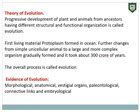The first living material, such as protoplasm, was formed in the ocean, and further changes went from simple unicellular animals to large, more complex organisms. This took about 300 crore years — 3 billion years. The overall process of development from single to multicellular and complex animals, with changes in structural and functional organization, is called evolution.